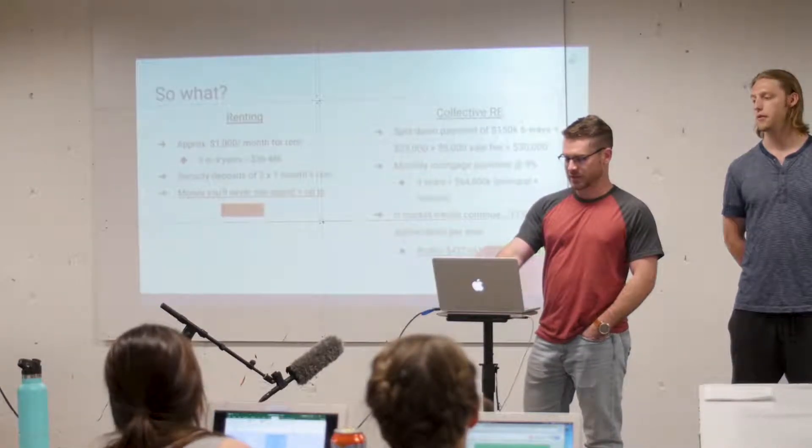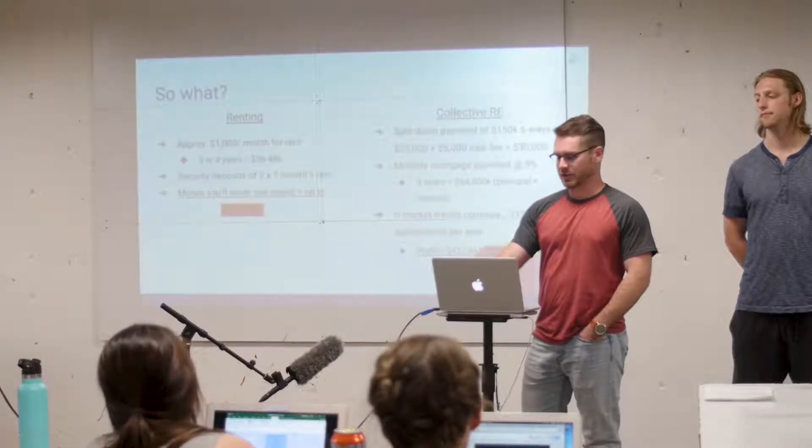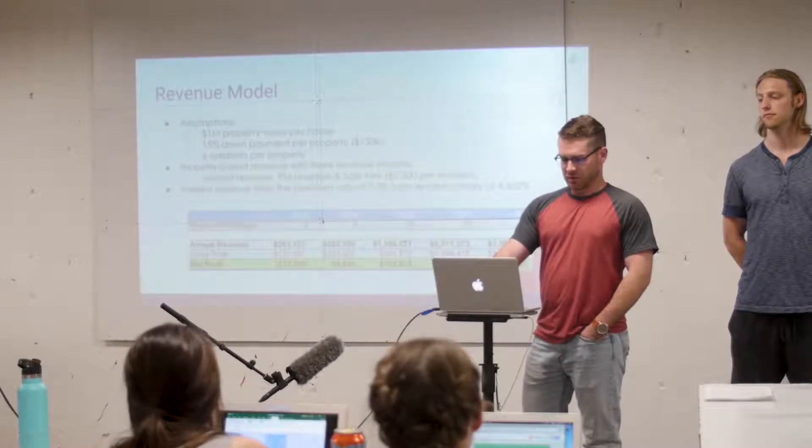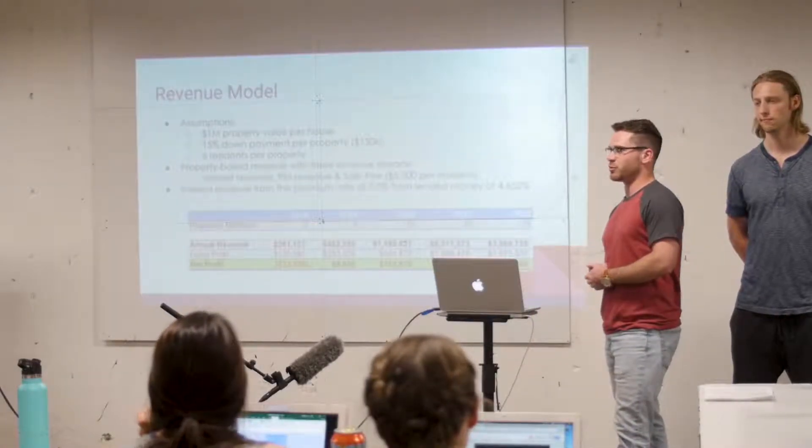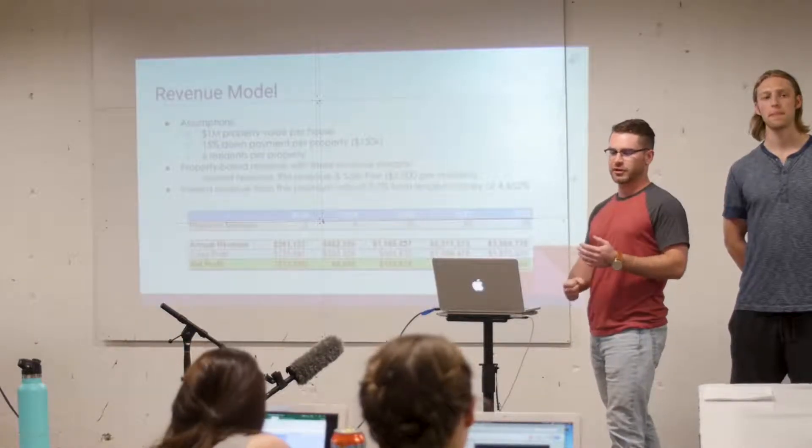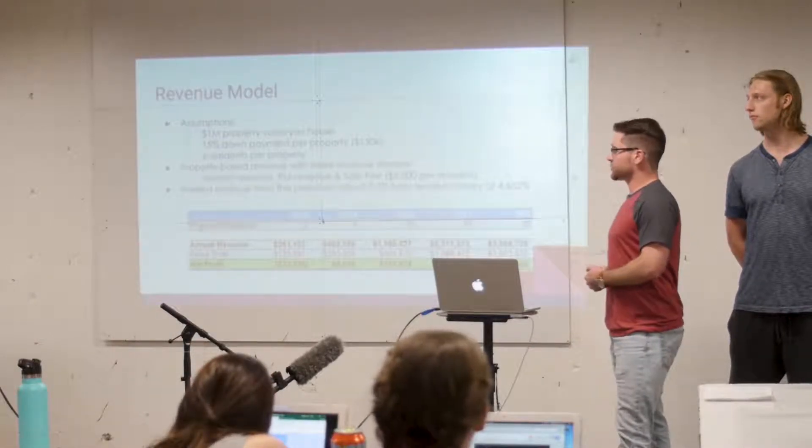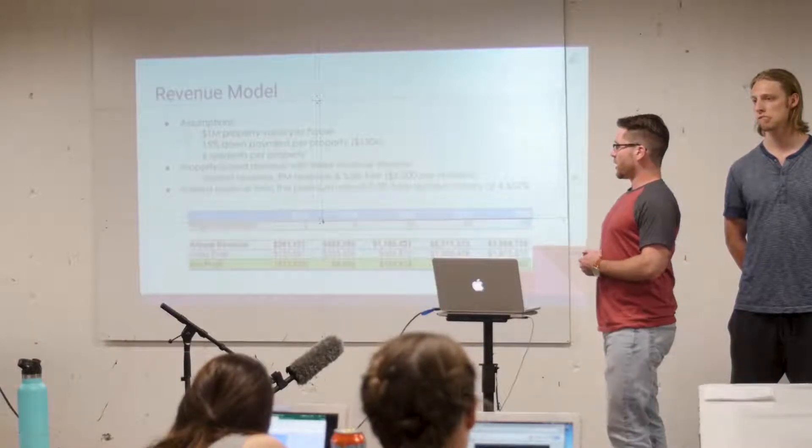So essentially, I mean, that's a year and a half of school for an out-of-state student. So looking at our revenue, like I said, we kind of used some round assumptions. So million dollar property values with a 15% down payment and six residents per property.